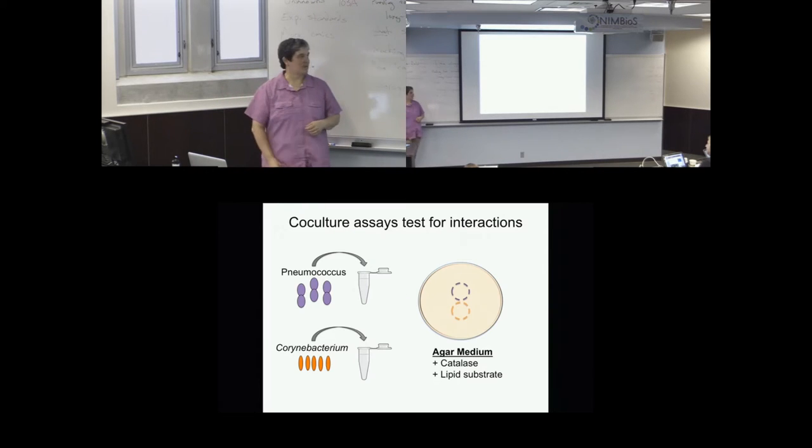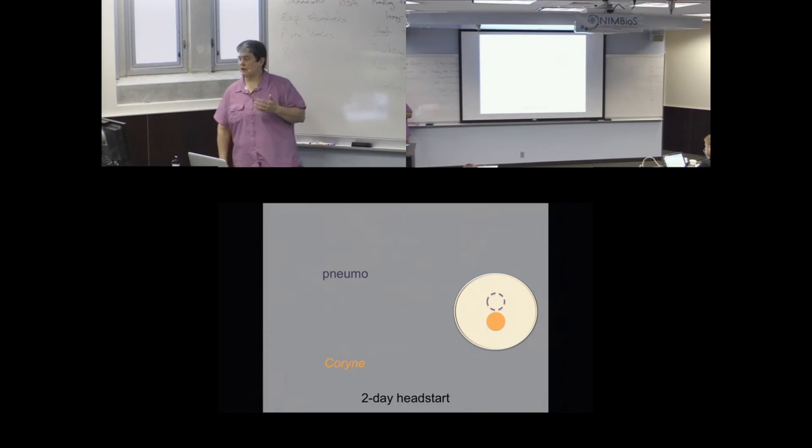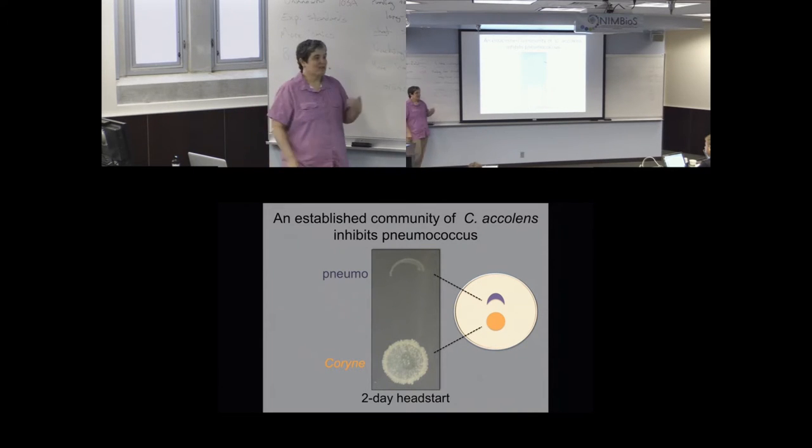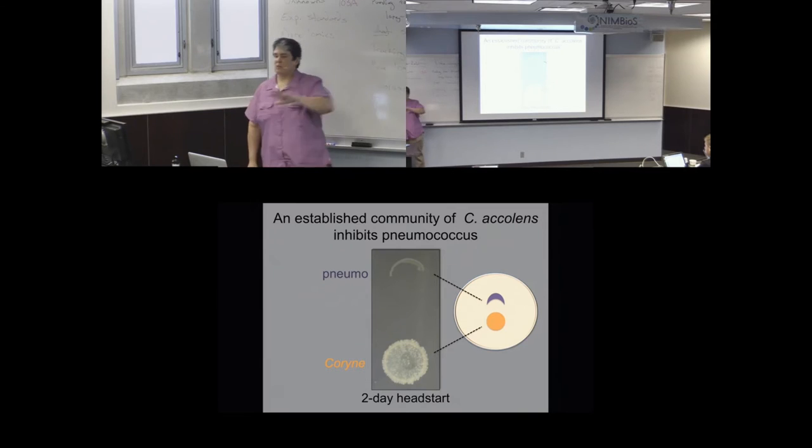Having found a lipid that more mimics the natural environment, we set up a co-cultivation assay. We start with known amounts of pneumococcus and Corynebacterium, and we spot five microliter spots onto medium. We've got our catalase to mitigate the peroxide effects. We've got our lipid substrate the accolens needs. We give Corynebacterium a two-day head start because it grows a lot slower. Then we inoculate the pneumococcus next to it. We wait overnight. And what we observe is that an established community of Corynebacterium accolens produces something that diffuses out into the medium and inhibits pneumococcus. So if you're us, this is fantastic because now in the medium is a diffusible antipneumococcal substance.